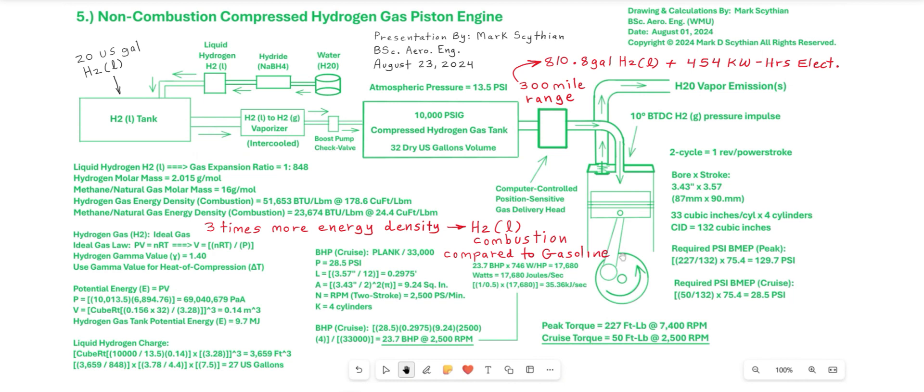So that means we have 126 million seven hundred and twenty thousand times three so this comes to 380 million 160 thousand joules per gallon of liquid hydrogen.